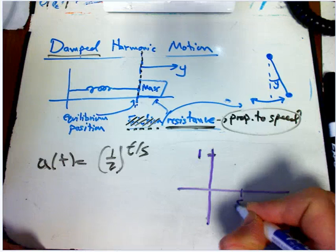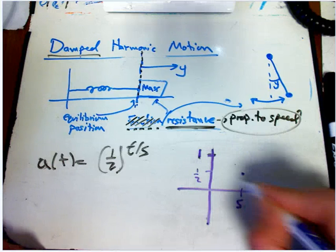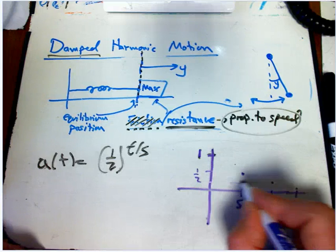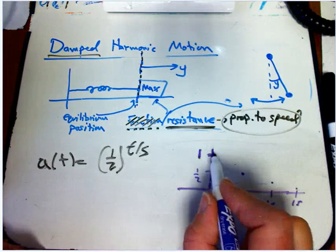This starts at one. Then at five seconds, it's a half. Then at 10 seconds, it's a quarter. Then at 15 seconds, it's an eighth. We get an exponential decay.